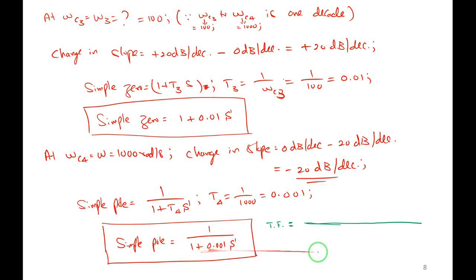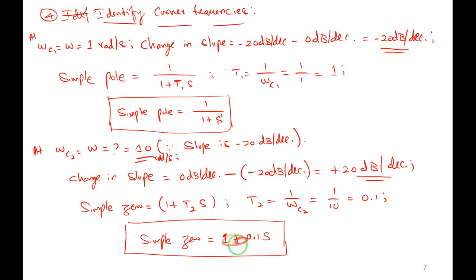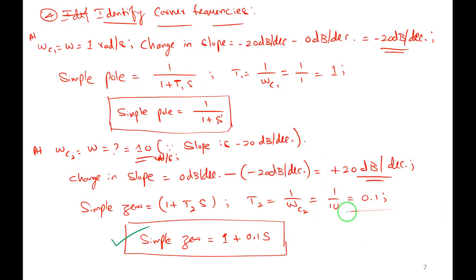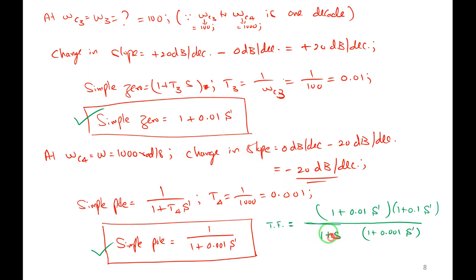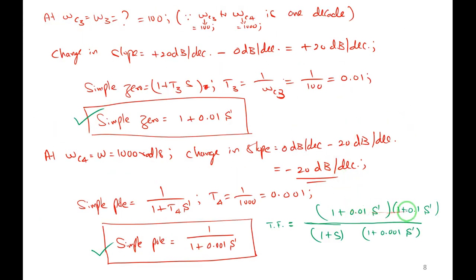Now finding K. At ωc2 = 1 rad/s, the magnitude is 32 dB. Using the straight line equation y = mx + c, where y is magnitude, m is slope, and x is log ω: at the flat region (0 dB/decade slope), y = 0·x + c = 32, so y-intercept c = 32 dB.